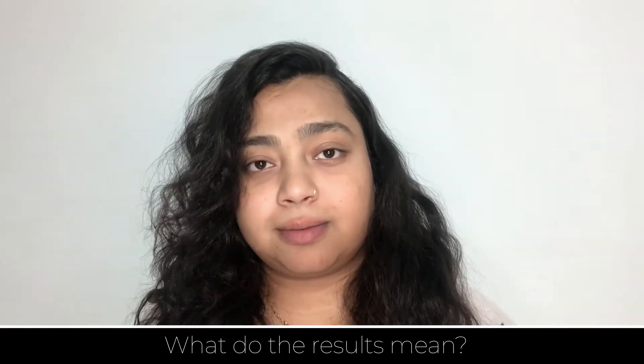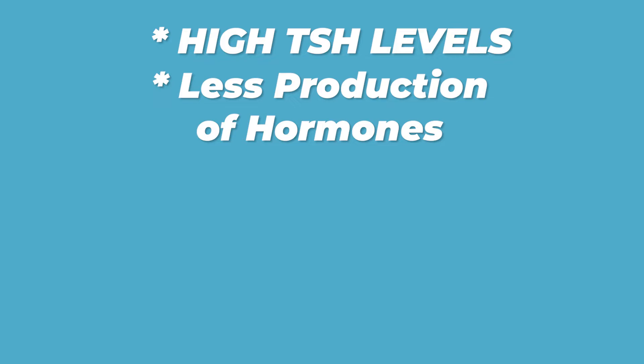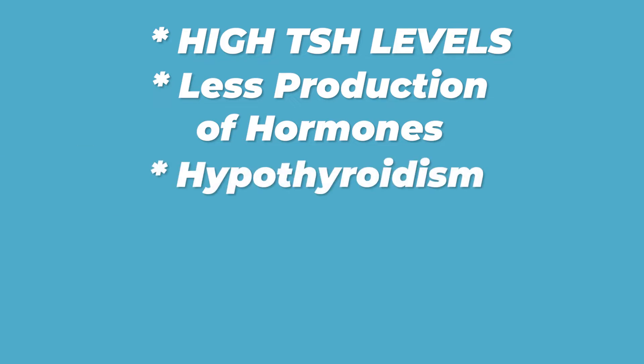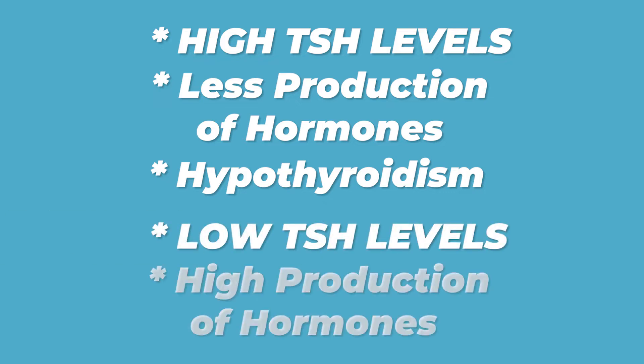Now, coming to the results — what do the results mean? High TSH levels mean your thyroid isn't making enough hormones, indicating a condition known as hypothyroidism. Low TSH level means your thyroid is making much more hormone, a condition known as hyperthyroidism.